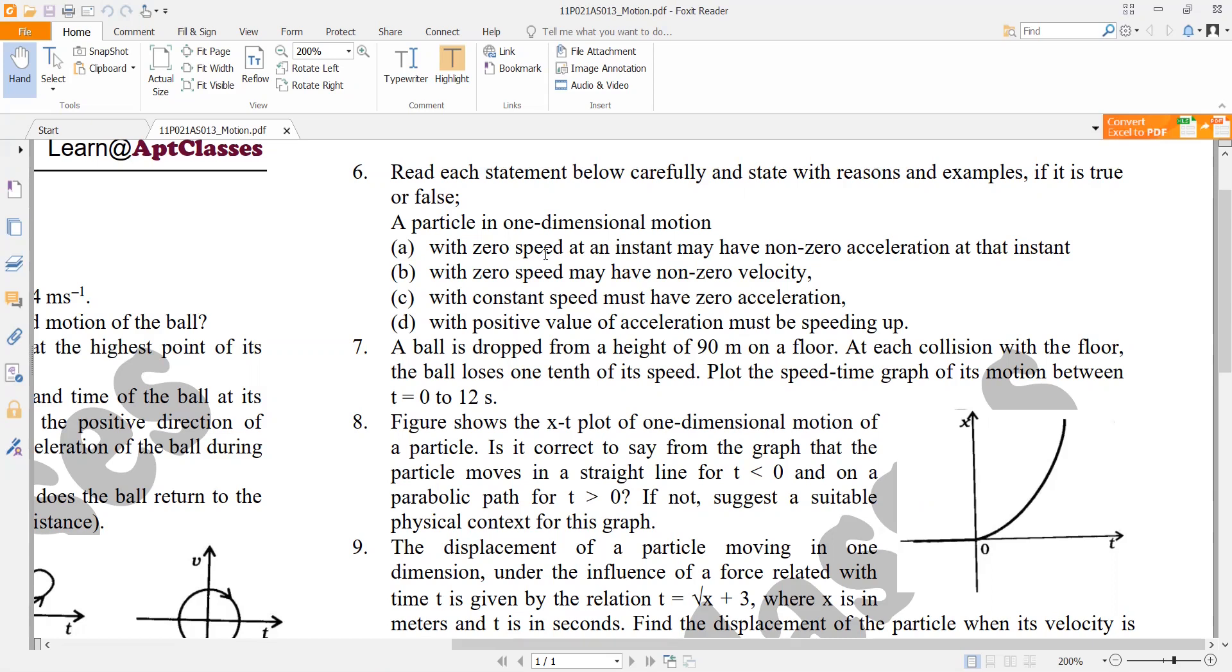The second case is with zero speed, it may have non-zero velocity. Speed and velocity have different directions. If the magnitude is zero, the speed is zero and the velocity is zero. The statement is false. The first statement is true.